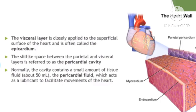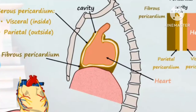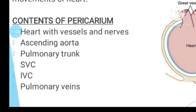The visceral layer is closely applied to the heart surface and is therefore also known as the epicardium — 'epi' meaning outside the heart. The parietal layer lines the fibrous pericardium. Between the visceral and parietal layers lies the pericardial cavity. The parietal layer is also known as the fibrous pericardium.